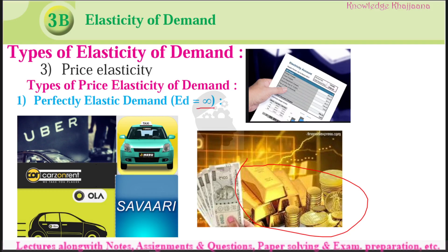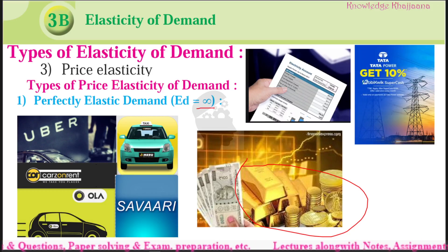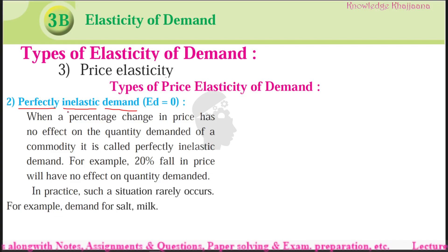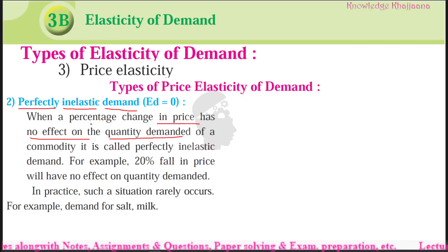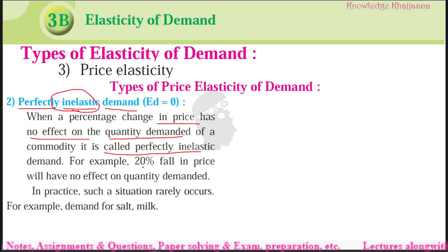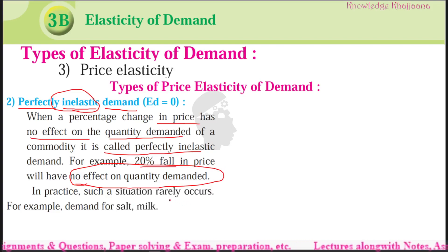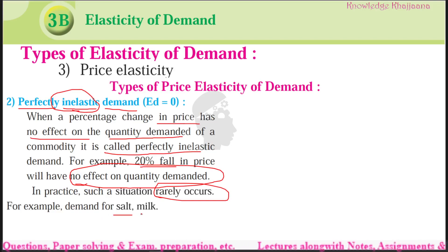The second type of price elasticity of demand is perfectly inelastic. Demand is perfectly inelastic means demand is remaining static, constant. When a percentage change in price has no effect on the quantity demanded — it has no effect, it is remaining inelastic and static — it is called as perfectly inelastic demand. For example, 20% fall in price will have no effect on quantity demanded.